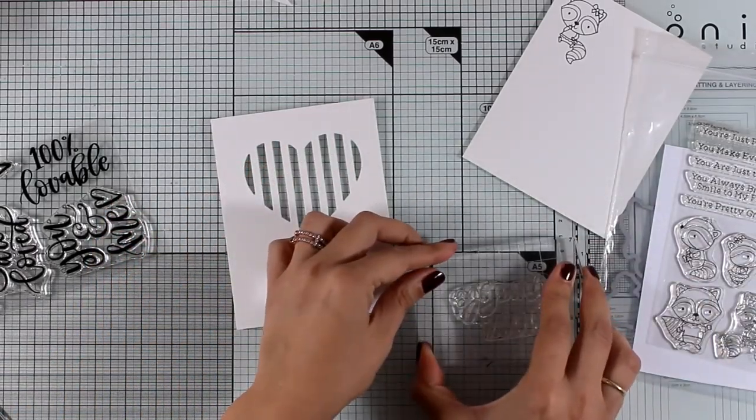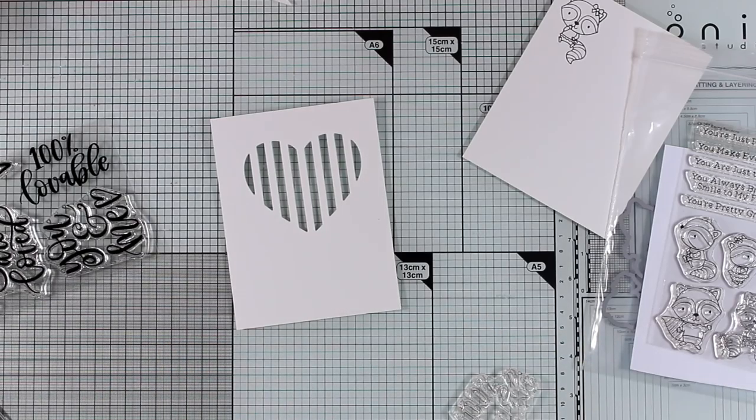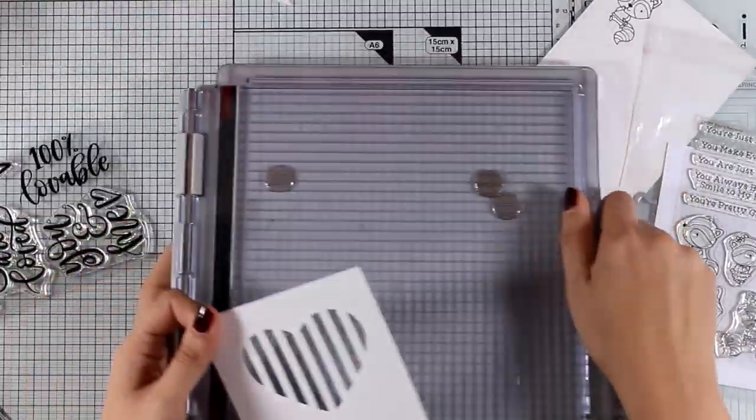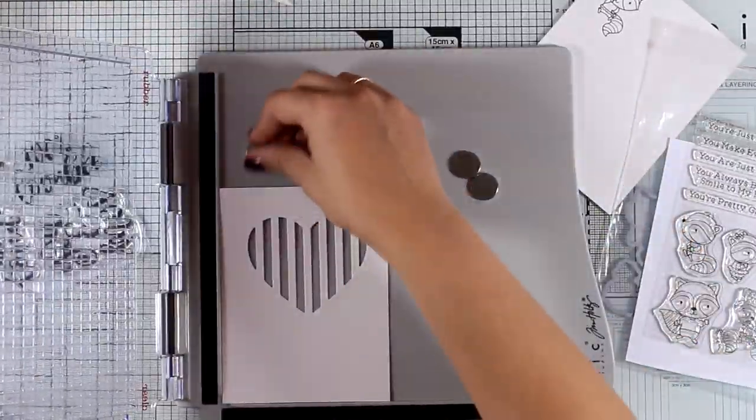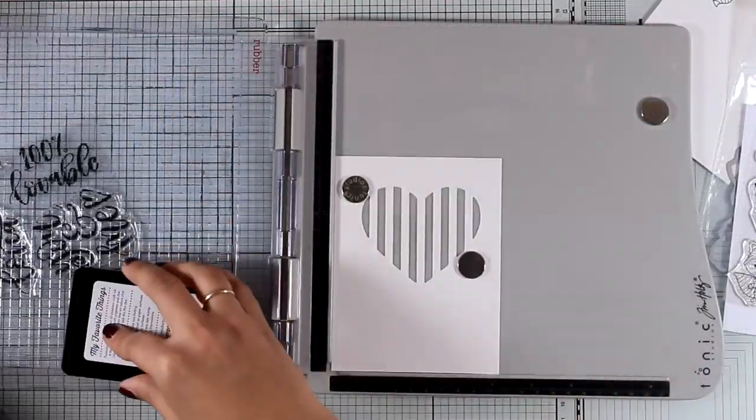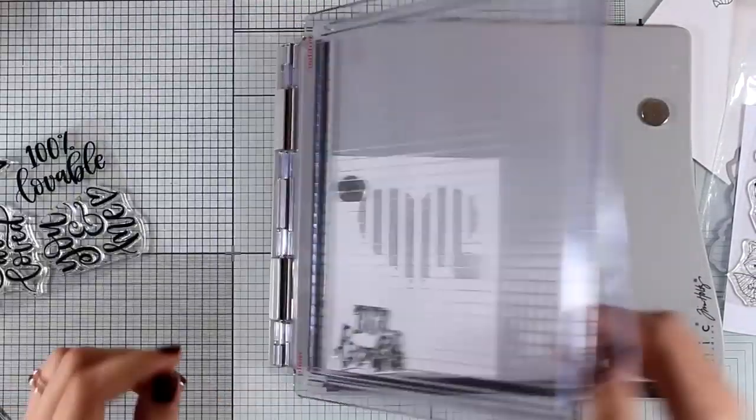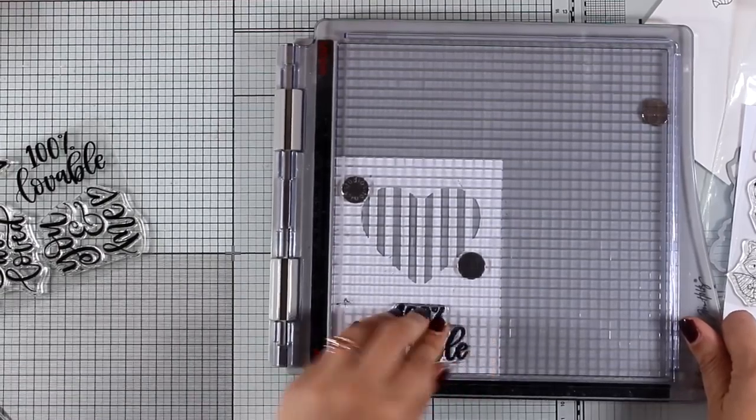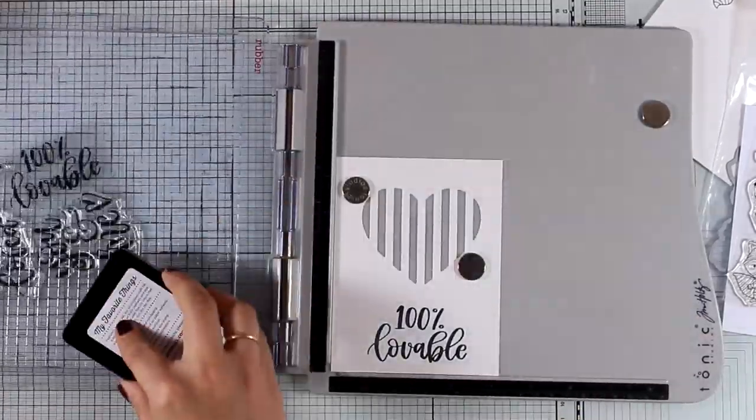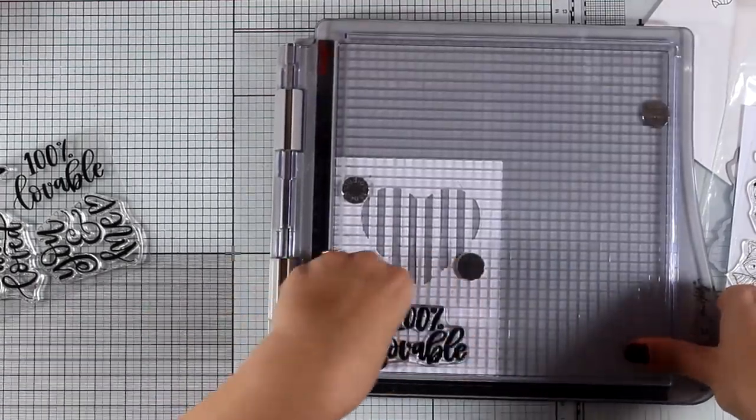I just love big bold handwritten sentiments, so I'm going to stamp that with my black ink again. But just because this is quite bold, I need to make sure that it's going to stamp nicely. In case I need to stamp once more on top of it, I'm using my stamping platform and I actually had to stamp it twice to get a lovely crisp sentiment on my panel.